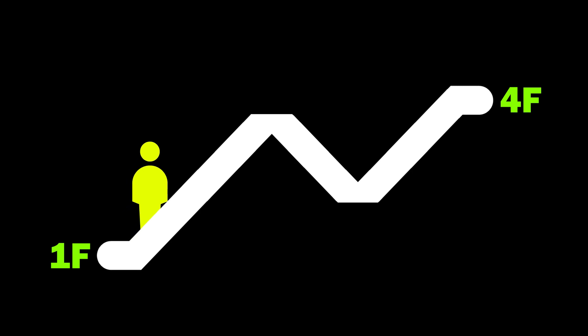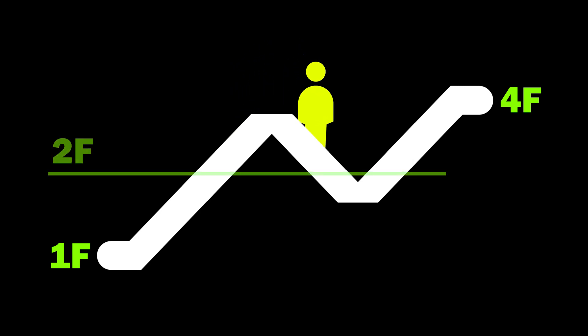Now look at a slightly different scenario. Here you can see an oddly shaped escalator that moves up and down like a roller coaster. In this case, the person will cross the height of the second floor more than once.